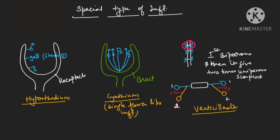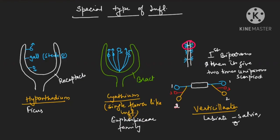Examples: hypanthodium inflorescence is shown by Ficus species — Ficus bengalensis, Ficus religiosa. Cyathium is shown by the Euphorbiaceae family. Verticillaster is shown by the Labiatae family — examples include Salvia and Tulsi plant, whose biological name is Ocimum. I hope in today's video all the types of inflorescence are clear to you. Thanks for watching.